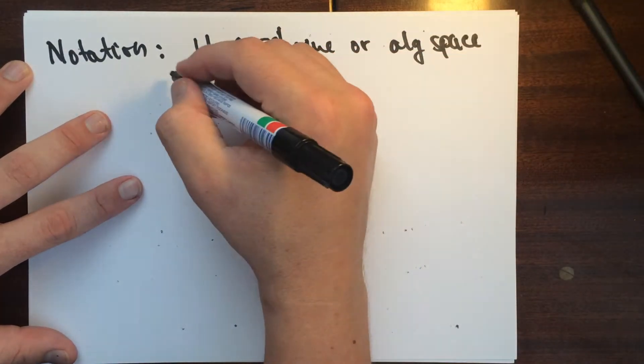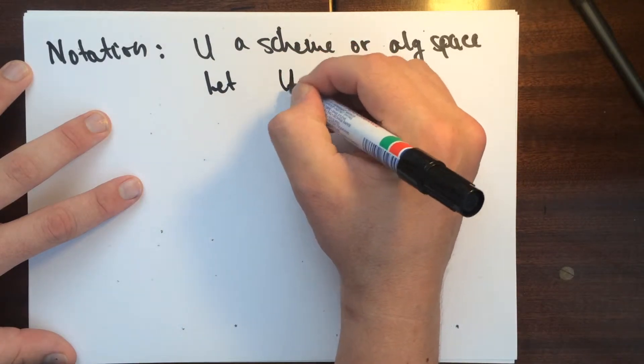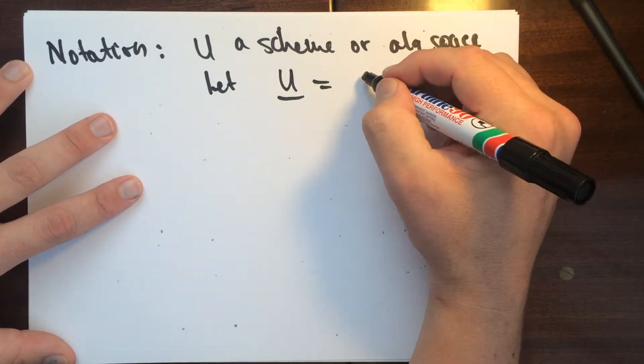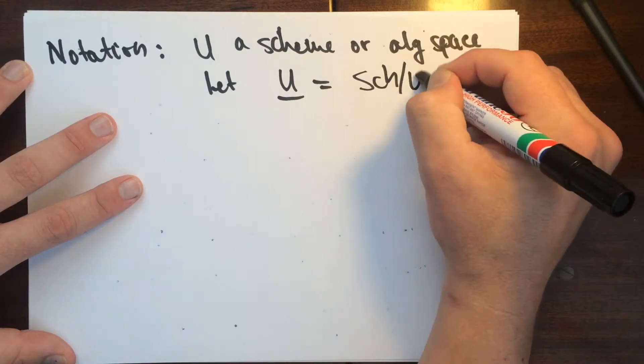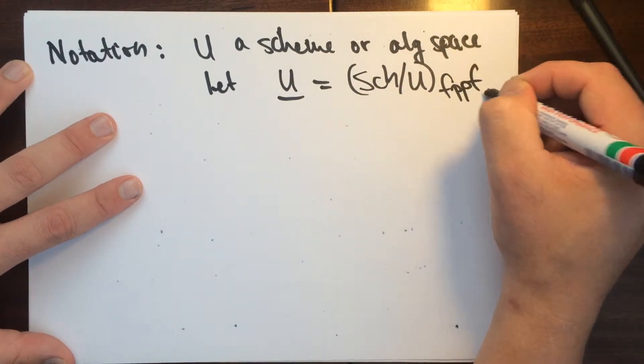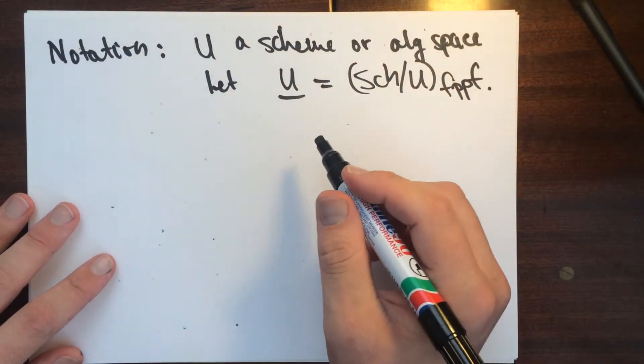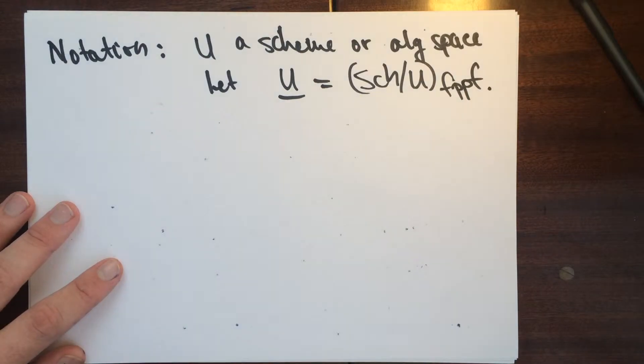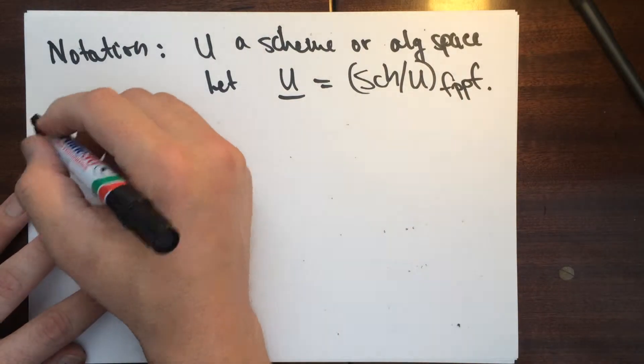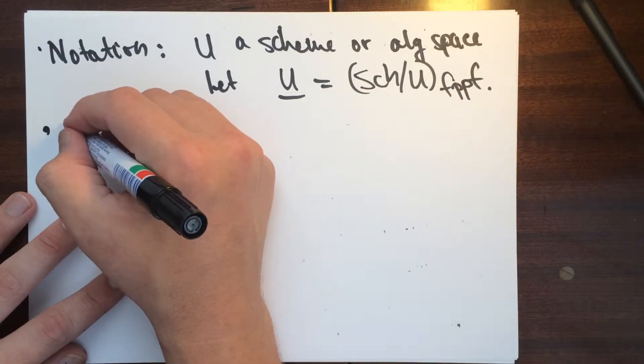Or algebraic space, we'll let U denote the category, this big fppf site associated to U. Okay, so this is just some terminology. Okay, there's also, there's also this construction I need.